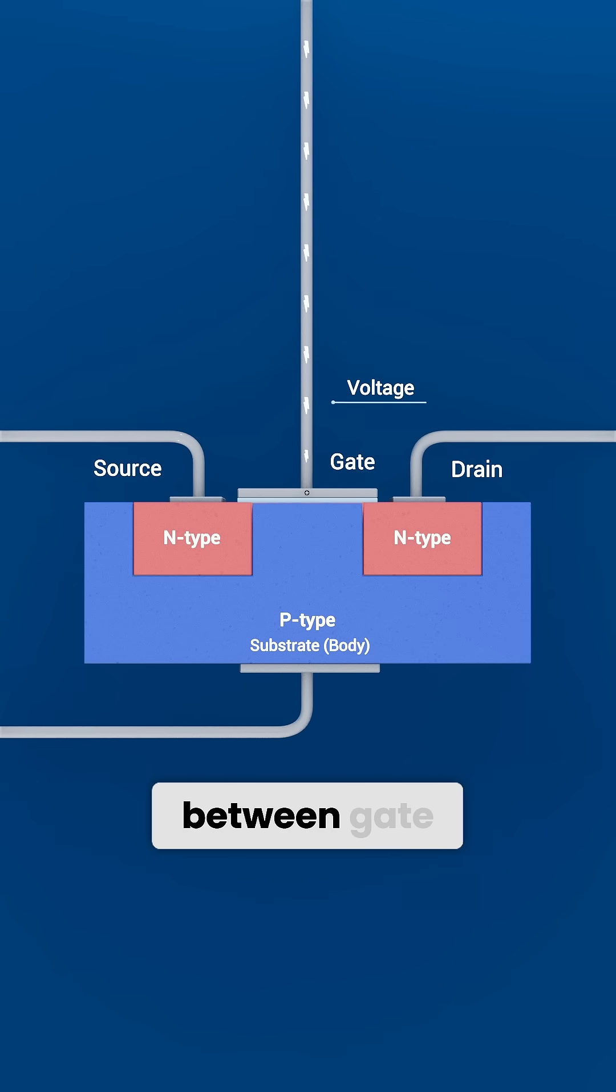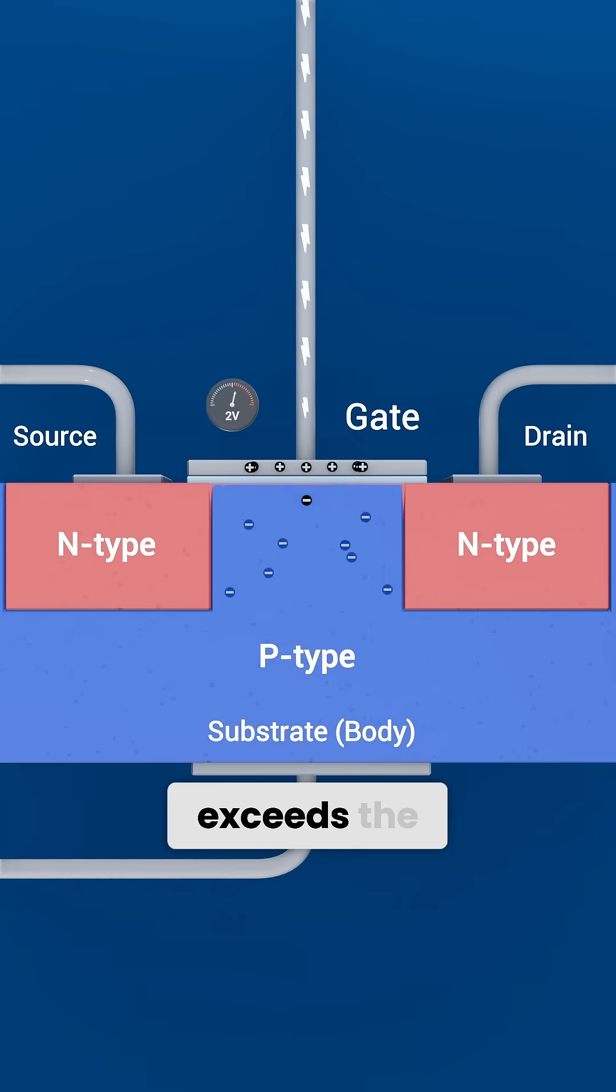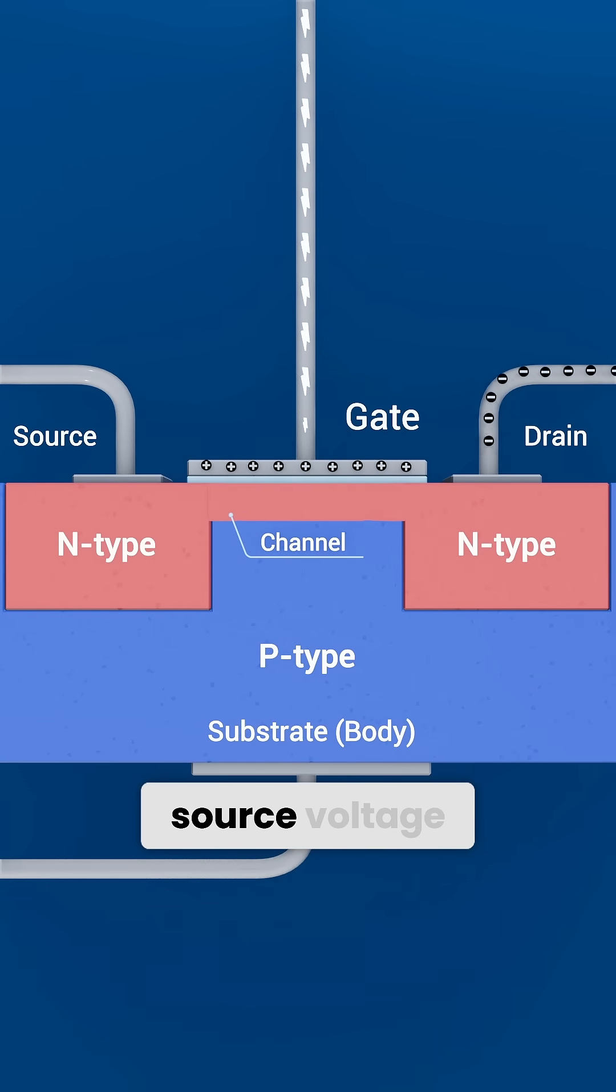If we apply a voltage between gate and source, an electric field forms across the oxide, inducing a conductive channel in the silicon between source and drain. If that gate voltage exceeds the threshold voltage, a channel forms and current can flow when you apply a drain source voltage.